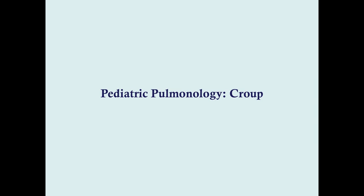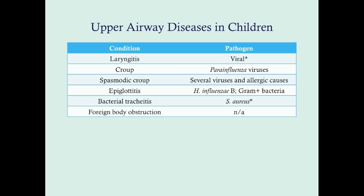We're going to talk about croup here. This is very common, so you want to be very well aware of how it presents — the classical presentation, as well as some of the other things that may show up and throw you for a loop. This goes with our broader talk on upper airway diseases in children — these are all acquired upper airway diseases, and these are the ones most important for the test.